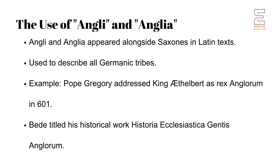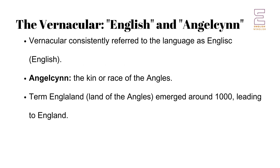Over time, the terms Angli and Anglia began to appear in Latin texts alongside Saxons. These terms referred not only to the Angles specifically but were often used to describe all the Germanic tribes collectively. For instance, Pope Gregory addressed Aethelbert, the King of Kent, as Rex Anglorum in 601. Similarly, Bede in the 8th century titled his historical work Historia Ecclesiastica Gentis Anglorum, using the term Anglia to refer to the various Germanic groups in Britain.